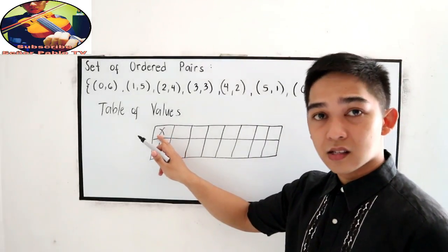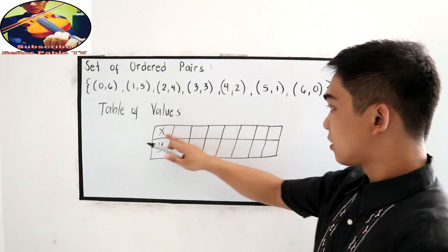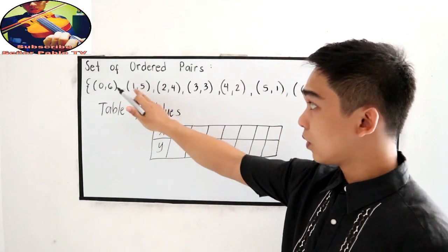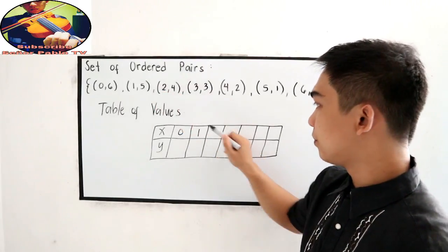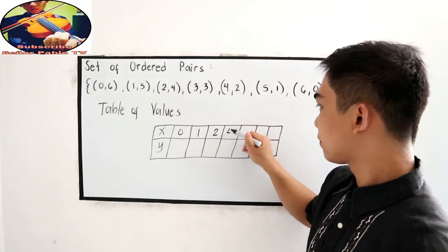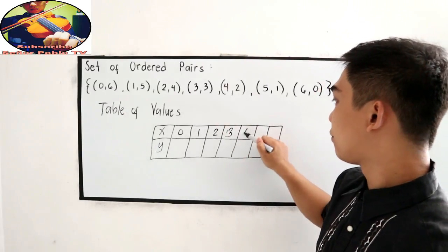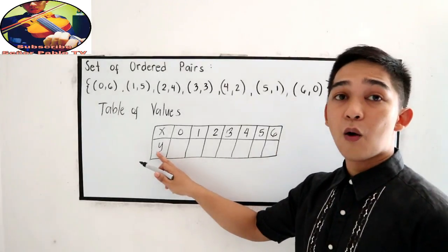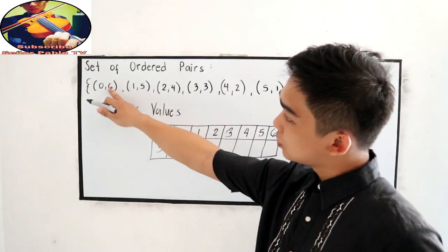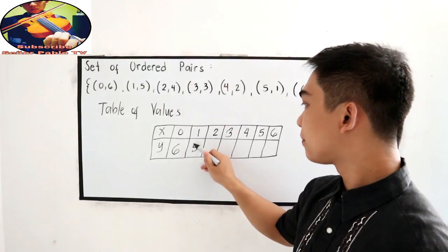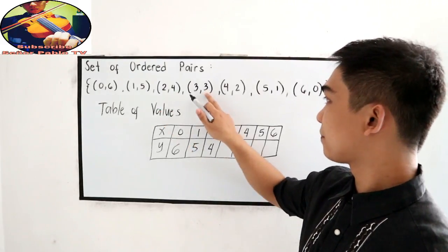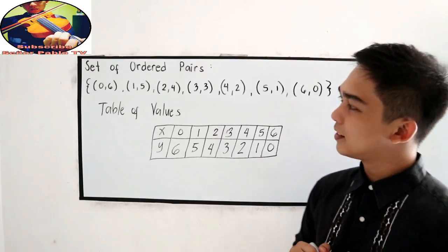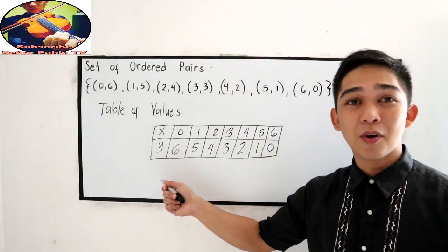Let us write all the x-coordinate under our x. So, our x are 0, 1, 2, 3, 4, 5, and 6. And now, our ordinate. So, we have 6, 5, 4, 3, 2, 1, and 0. This is what we call the table of values.